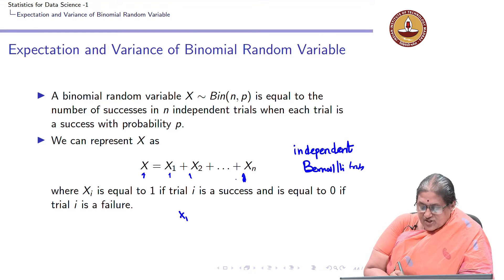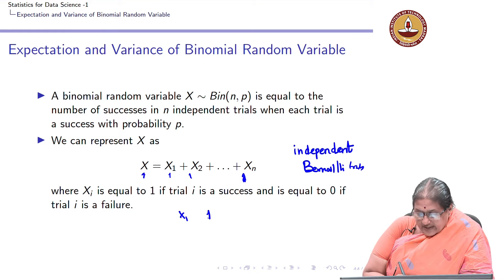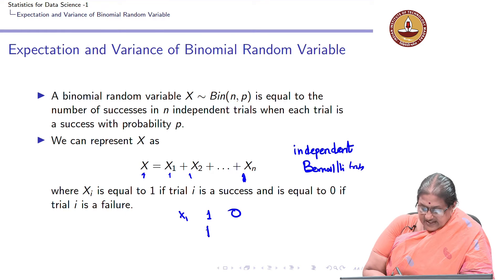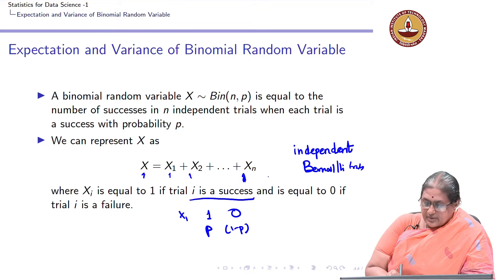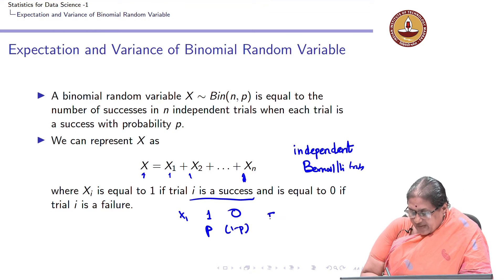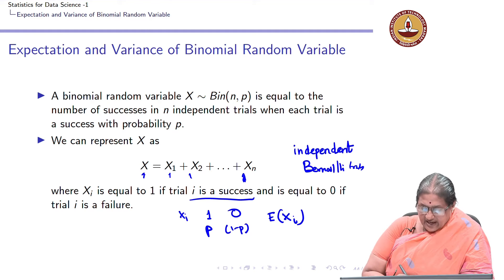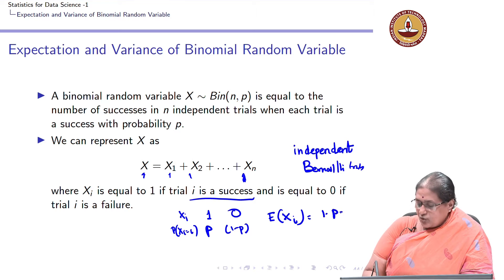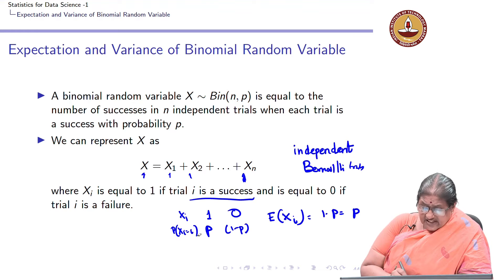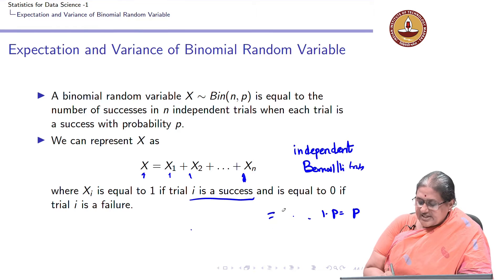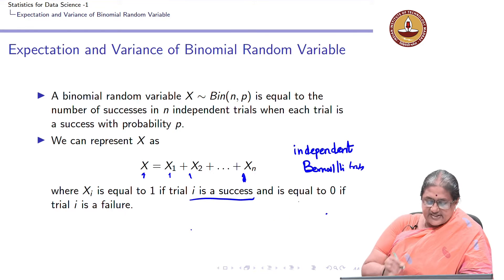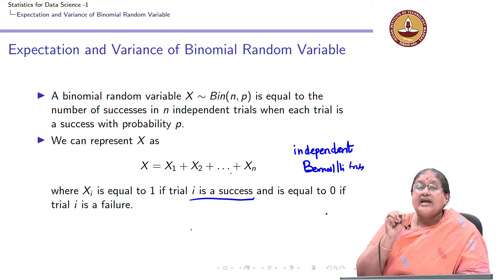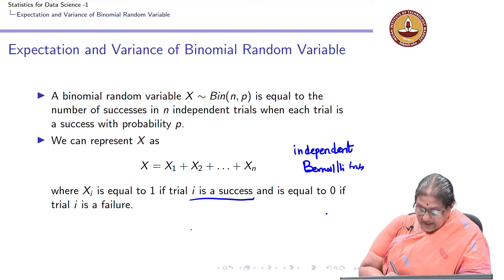If x1, x2, ..., xn are independent Bernoulli trials, each takes the value 1 with probability p and 0 with probability 1 minus p. The expectation of each xi is 1 times p, which equals p. So expectation of x1 equals expectation of x2, which equals expectation of xn. I am expressing my binomial random variable as a sum of n independent Bernoulli random variables.